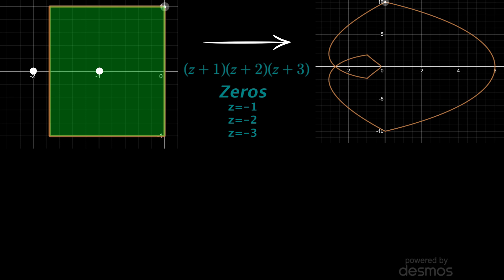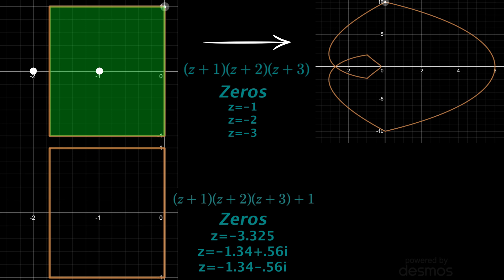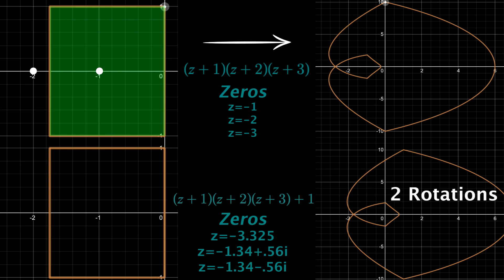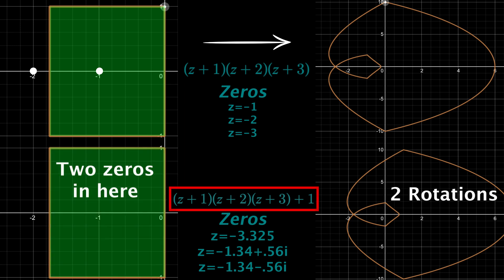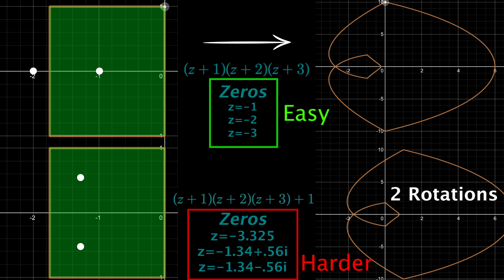But now let me ask: what are the zeros of that same function plus 1? This actually makes the problem much more complicated. There's not a simple visualization where we can just shift the zeros over by 1 — here are the three zeros, which isn't remotely obvious by looking. Simply adding that 1 made things more difficult. But putting those same inputs through this new function is easy because the outputs will be the same, just shifted by 1. Now this graph goes around the origin twice because that smaller loop now also goes around it. If I were to show that needle tracking the output, you'd see two rotations. Therefore, I know this function has two zeros within the contour for the two rotations.